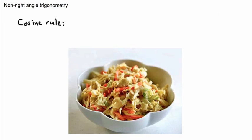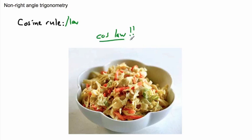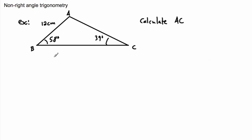Now I have a really bad joke about the cosine rule or cosine law. What is a mathematician's favorite food? Cos-law — because it sounds like coleslaw. When you have to explain a joke, it makes it even less funny. So let's keep going.